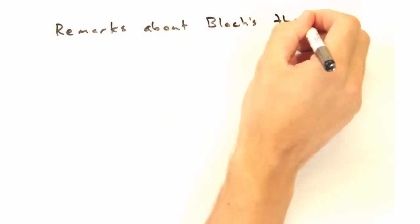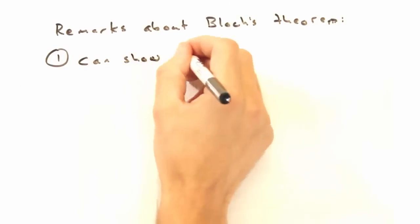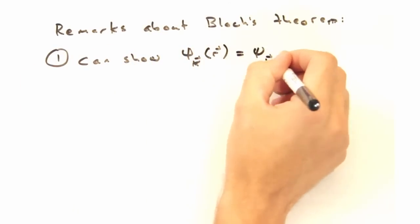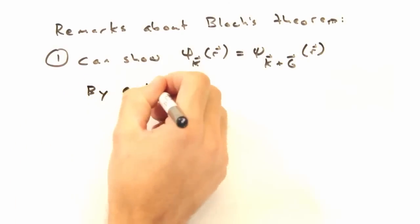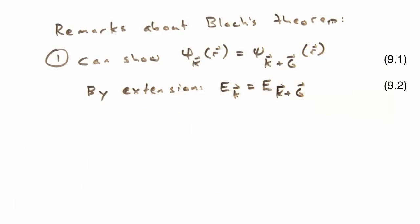Before we end today, though, I want to bring up a couple remarks about Bloch's theorem. The first is that we can prove our wave function at k equals our wave function at k plus g, and by extension, e sub k is equal to e sub k plus g.